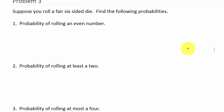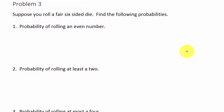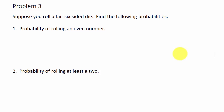Alright, here's part 2 of probability. Remember from the first video that the probability of an event occurring is the number of successful outcomes over the number of possible outcomes. Let's take a look at another problem. Suppose we roll a fair six-sided die — remember it's two dice, one die — find the following probabilities.